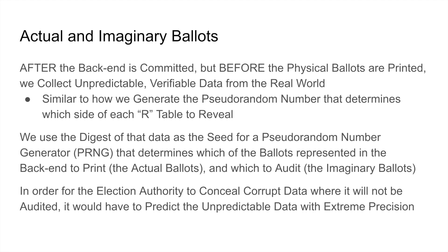This is similar to how we generate the pseudo-random number that determines which side of each R table to reveal. We use the digest of that data as the seed for a pseudo-random number generator that determines which of the ballots represented in the back-end to print — the actual ballots — and which to audit — the imaginary ballots. In order for the election authority to conceal corrupt data where it will not be audited, it would have to predict the unpredictable data with extreme precision.